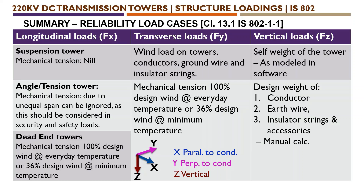For dead end towers, the longitudinal forces we need to consider are: 100% designed wind at everyday temperature, or 36% designed wind at minimum temperature. These are the three parameters under which we need to consider the longitudinal loads for reliability load cases.